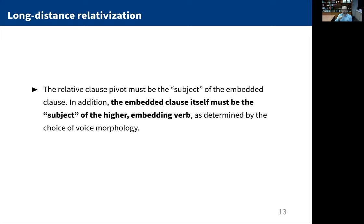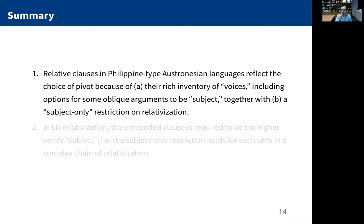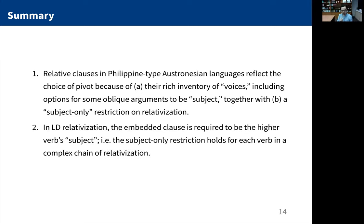To summarize the behavior of Philippine-type languages: relative clauses reflect the choice of extracted pivot because of their rich inventory of so-called voices, including options for oblique arguments to be the so-called subject, together with a subject-only restriction on relativization and other A-bar extractions. In long-distance relativization, the embedded clause is required to be the higher verb's subject — the subject-only restriction holds for each verb in a complex chain, with each movement step being movement of the subject or movement out of the subject.